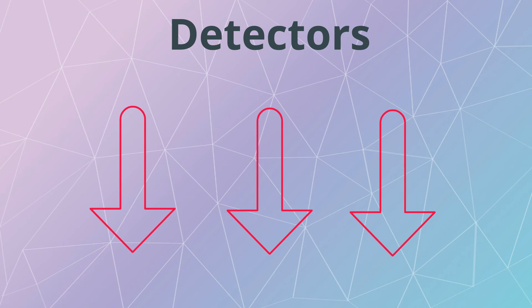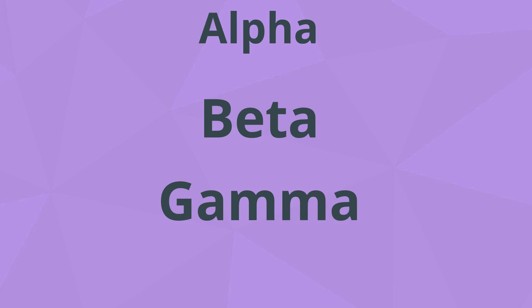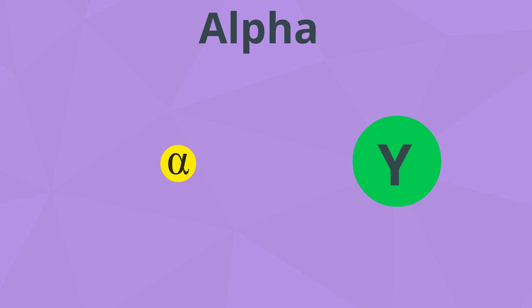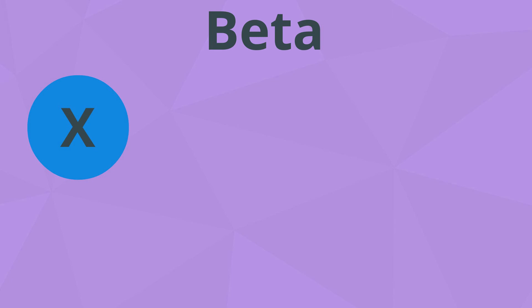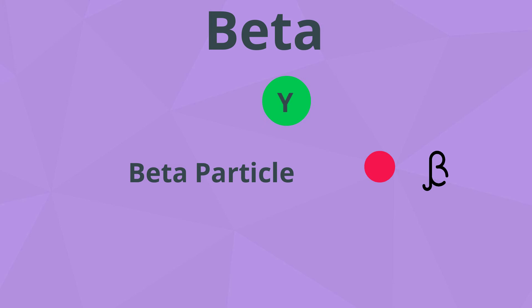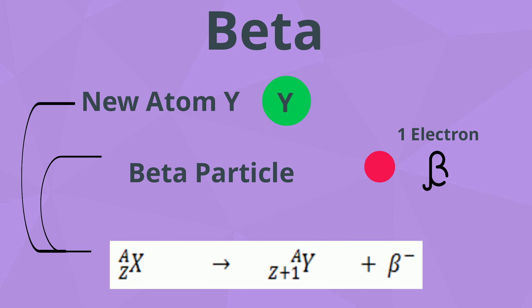Moving on to radioactive decay, which can be summarized into three parts: alpha, beta, and gamma. During an alpha decay, a radioactive atom X decays and emits an alpha particle, losing two neutrons and two protons, and becomes a new atom Y. During a beta decay, a radioactive atom X decays and emits a beta particle, where one of the neutrons disintegrates to become a proton and an electron. The electron is emitted out of the nucleus whereas the proton stays in the nucleus, which explains the proton number increasing by one while the nucleon number remains unchanged. Lastly, gamma emissions cause no change in nucleon number or proton number.